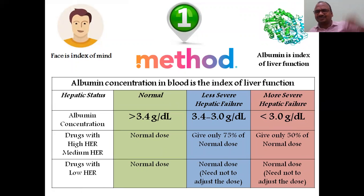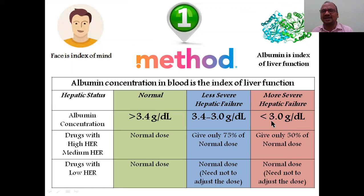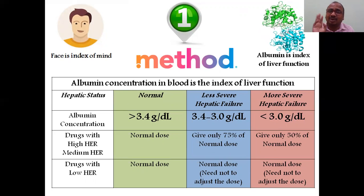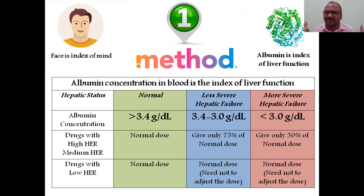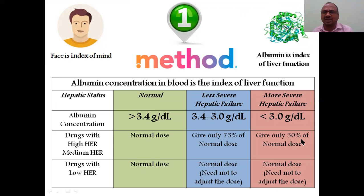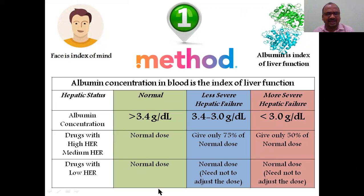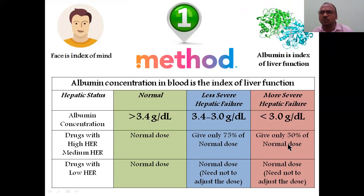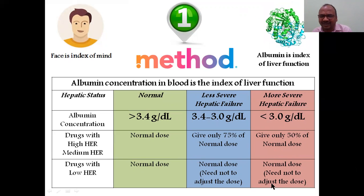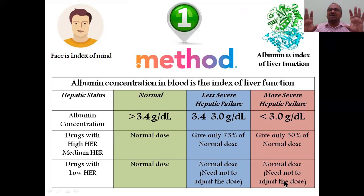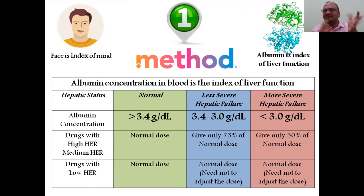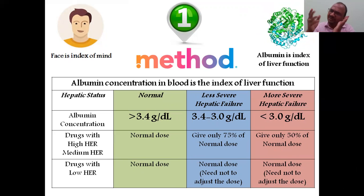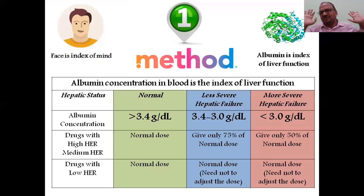For more severe hepatic failure, the albumin level falls below 3.0 g/dL. Albumin is synthesized in the liver, so a severe condition means decreased albumin. In such a case, for high and moderate hepatic extraction ratio drugs, give only 50% of the normal dose. For low hepatic extraction ratio drugs, normal dose is given. So 100 mg normal dose becomes 50 mg for the patient.